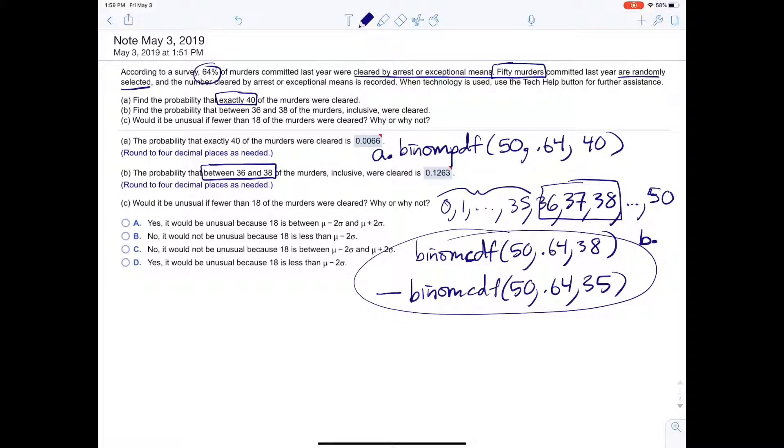Part C, would it be unusual if fewer than 18 of the murders were cleared? Why or why not? It wants us to do this by thinking about the fact that if you have a mean in the middle, and you add and subtract 2 sigma, and then here you add 2 sigma, these are like the usual values. So then unusual would be out here.